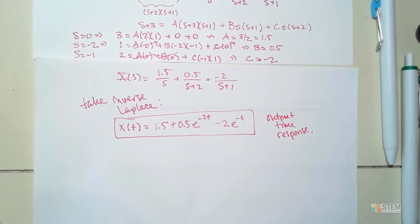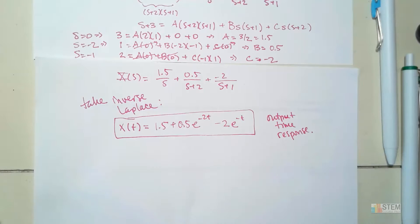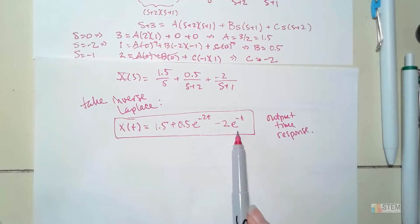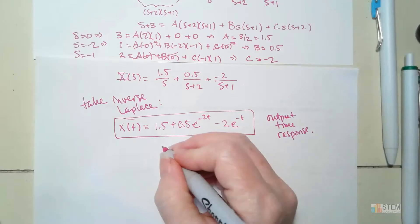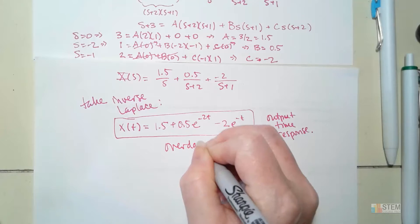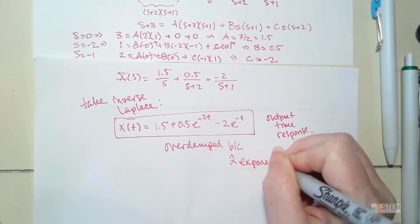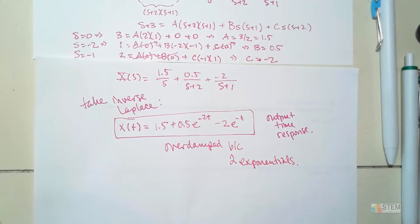The problem also asked what type of response this is. We have two exponential terms — neither is multiplied by t — and exponential terms provide damping. When we have two distinct real exponential terms like this, that means we have an overdamped system.